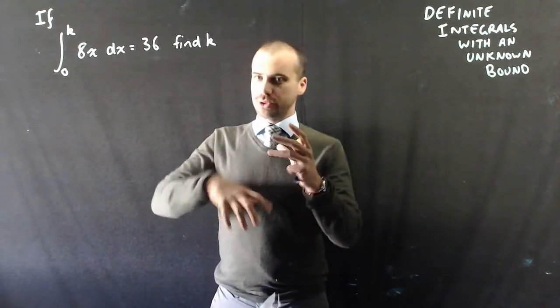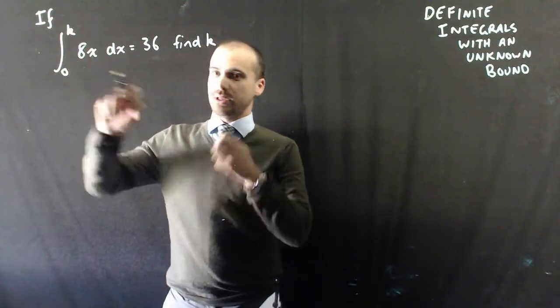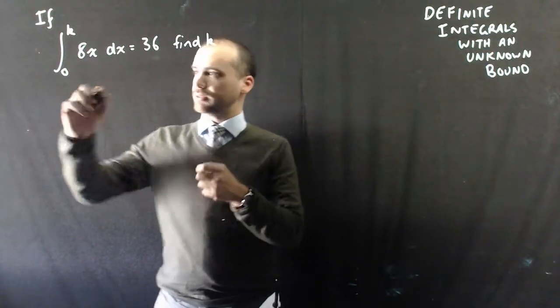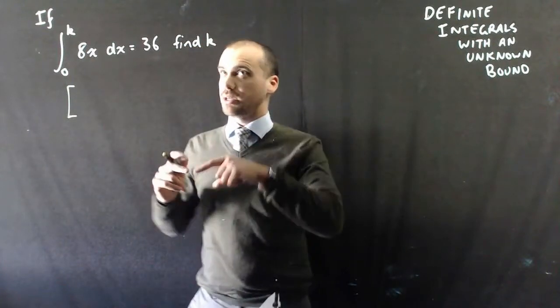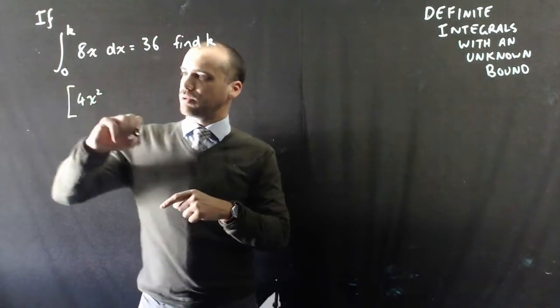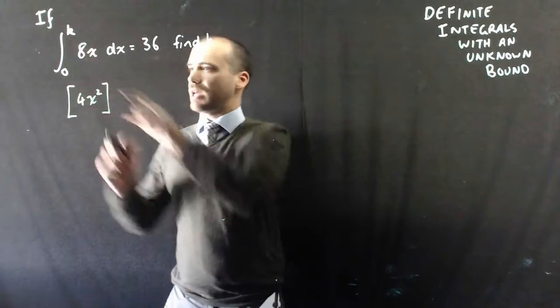Okay, so we'll just step it through. If we're going to do this, we're going to need to integrate here. All right, so the integral of that is 4x squared, and it's between k and 0.